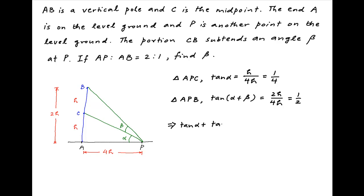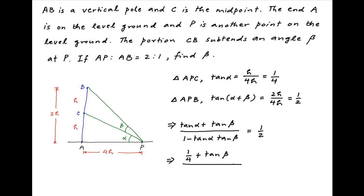Now, tan of alpha plus beta can also be written as tan alpha plus tan beta, divided by 1 minus tan alpha tan beta, and this is equal to half. Substituting the value of tan alpha which is 1 upon 4, we get 1 upon 4 plus tan beta, divided by 1 minus 1 upon 4 times tan beta, is equal to half.